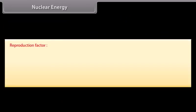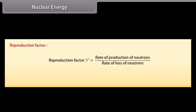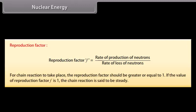Reproduction factor. It is defined as the ratio of rate of production of neutrons to the rate of loss of neutrons. For chain reaction to take place, the reproduction factor should be greater or equal to 1. If the value of reproduction F is 1, the chain reaction is said to be steady.